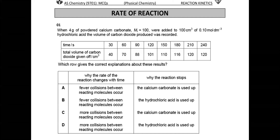Rate of reaction MCQs, Question 1. When 4 grams of powdered calcium carbonate (mass 100) were added to 100 cm³ of 0.1 mol per dm³ hydrochloric acid, the volume of carbon dioxide produced was recorded over time. The total volume of carbon dioxide given off was recorded up to 240 seconds, with readings taken at 30-second intervals.